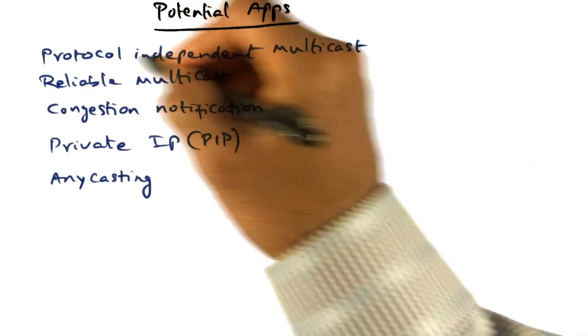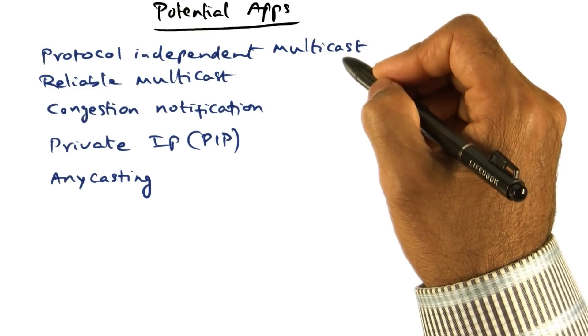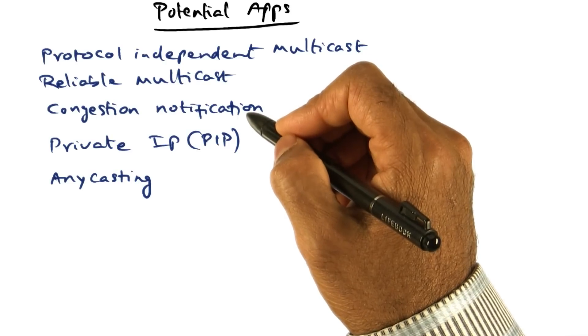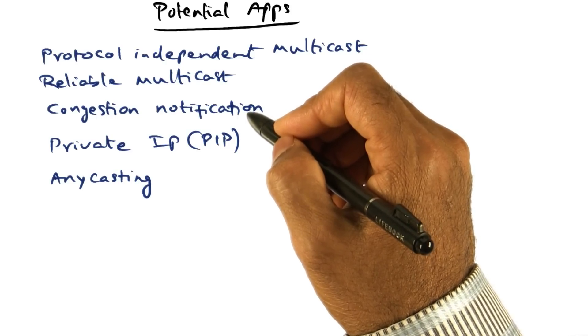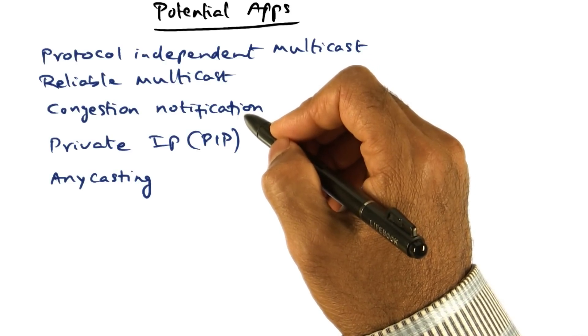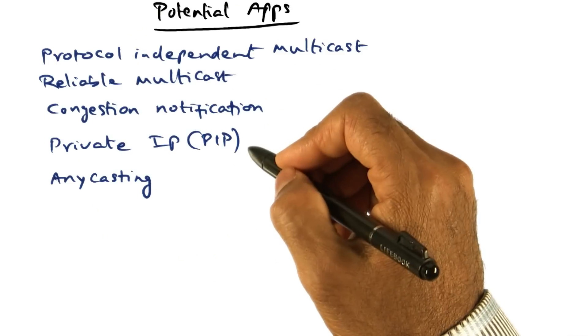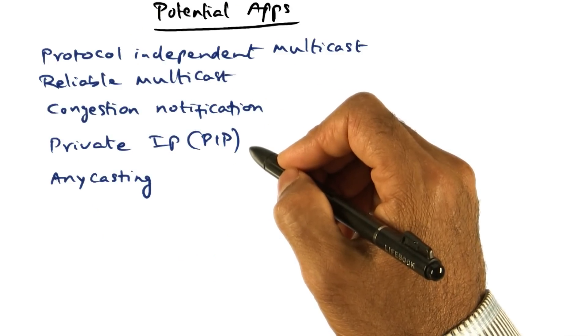For instance, implementing protocol independent multicast, reliable multicast, noticing congestions in the network and notifying the source and destination about congestions, private IP, anycasting - these are all useful to implement using active networks.